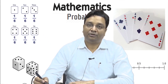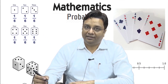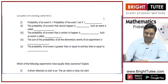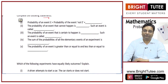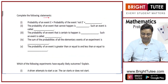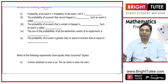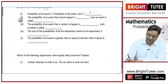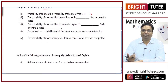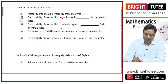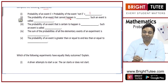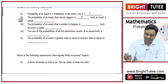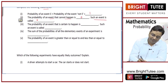Now that we are thorough with the concepts of probability, let us attempt this exercise. The first statement says: probability of an event E plus probability of the event not E is equal to 1. Either that event will happen or it will not happen, so their sum is 1. The probability of an event that cannot happen — that is, an impossible event — is 0.